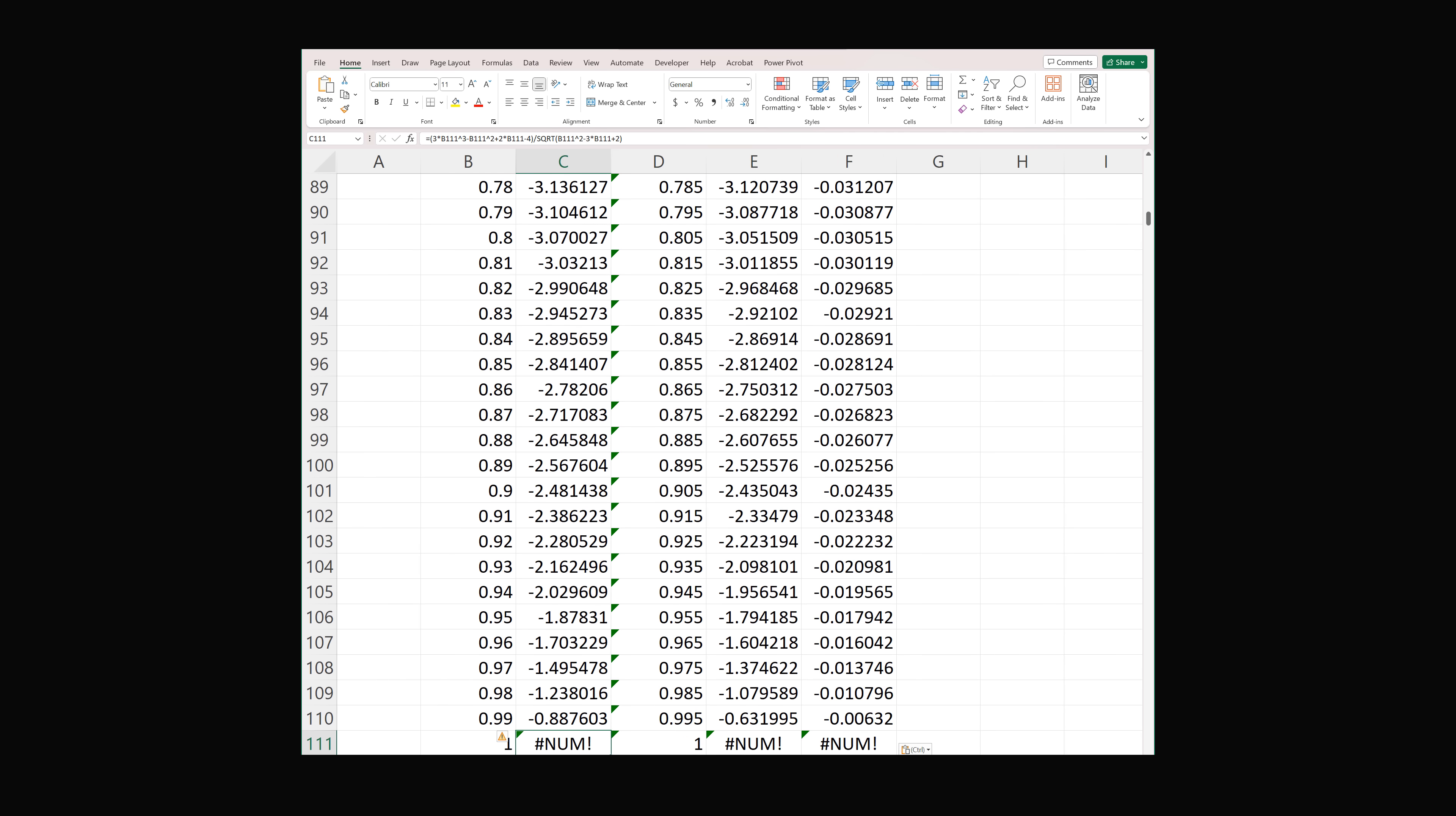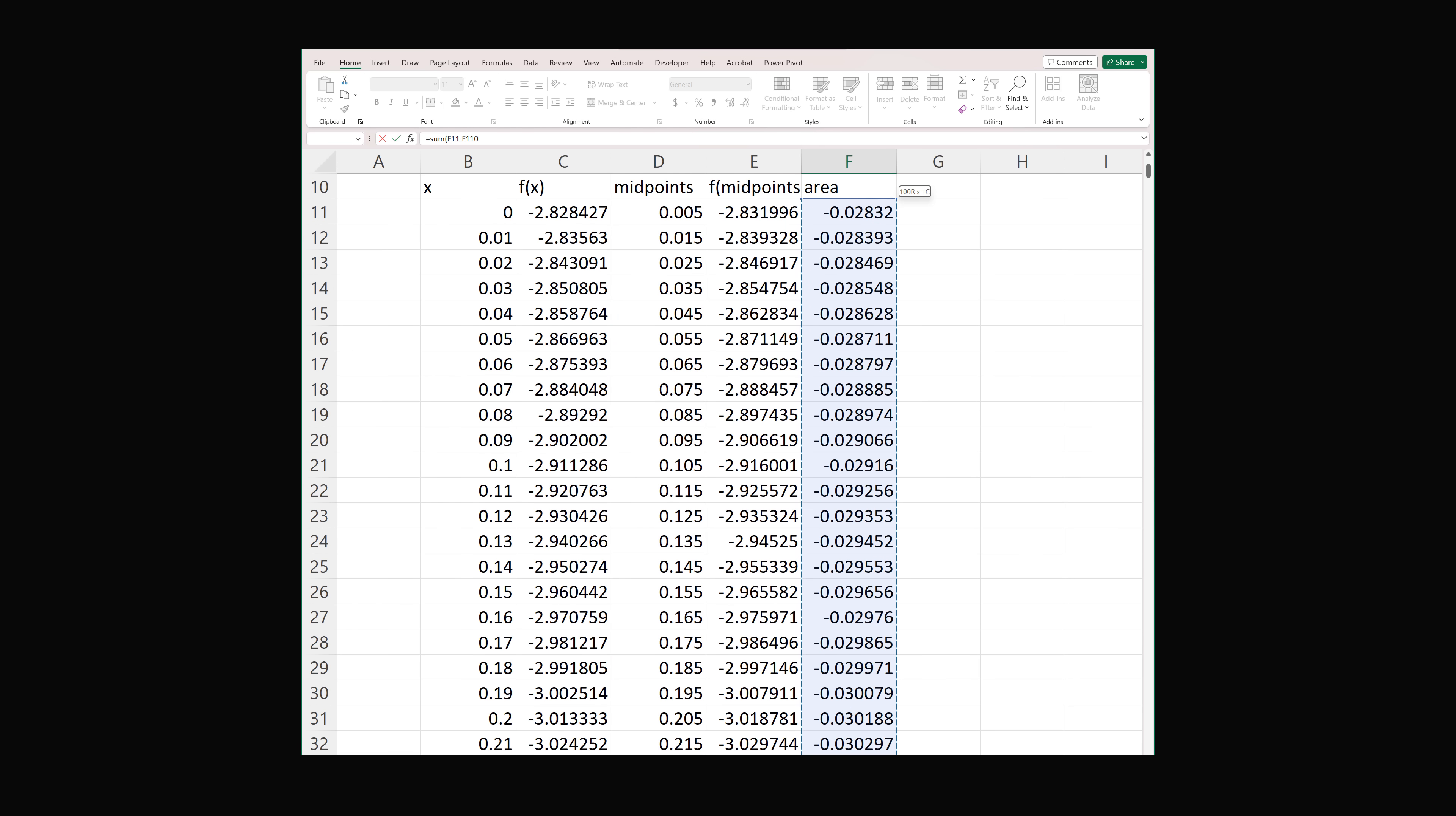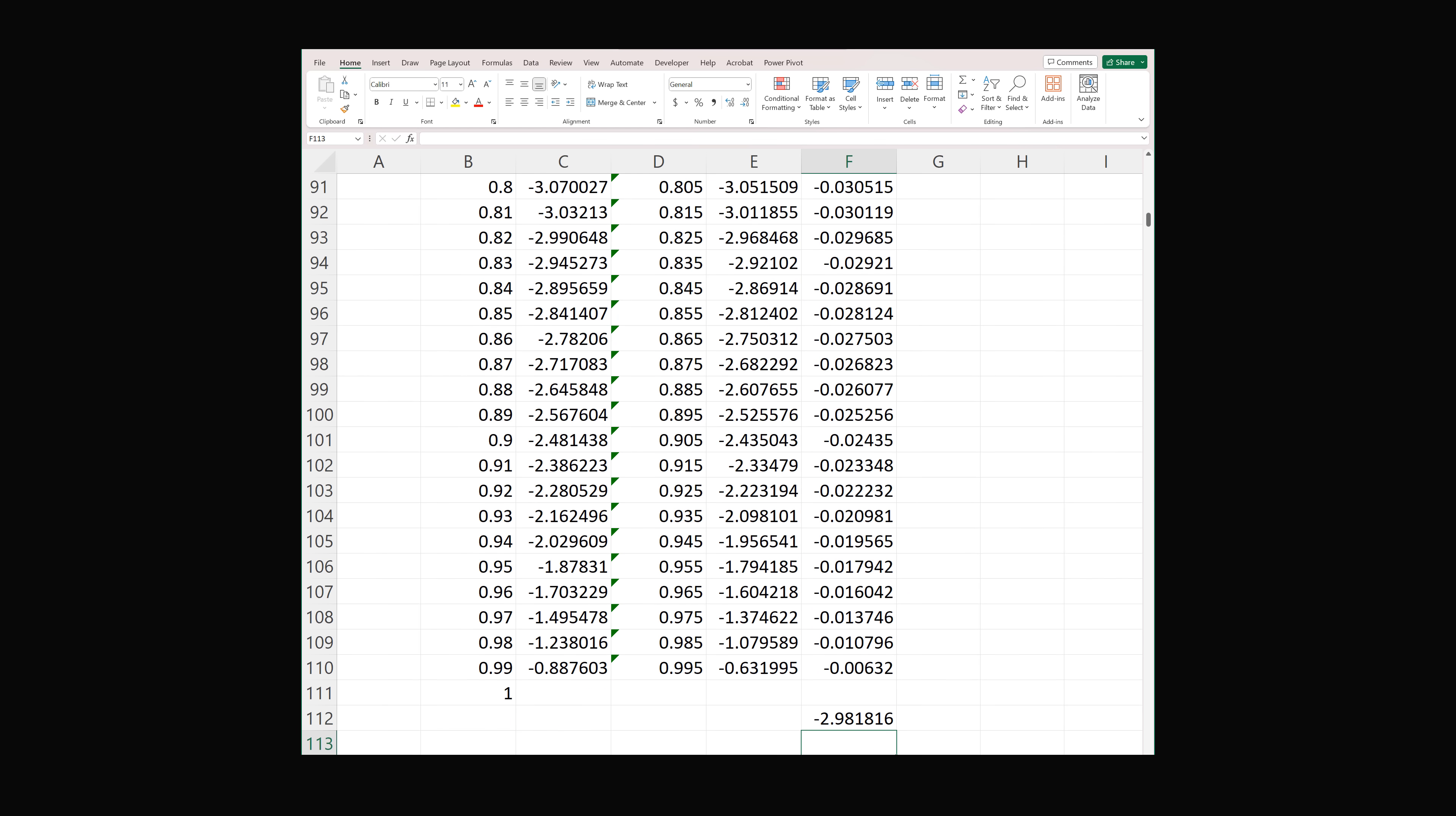Oh, and now we've learned something interesting. This is actually an improper integral. When x is equal to 1, the function will be undefined. No matter, we'll just delete these values. So now we want the area, which will exactly be the sum of the areas of all of these rectangles. So we just go ahead and sum up the areas. And we get negative 2.981. So we get pretty much the same answer we got analytically, but we found it numerically, and we found it pretty easily in Excel.